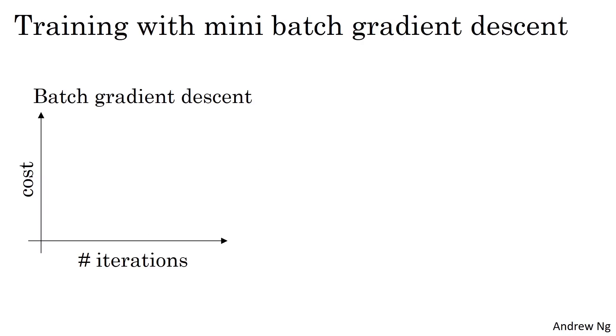With batch gradient descent, on every iteration you go through the entire training set, and you'd expect the cost to go down on every single iteration. So if you plot the cost function J as a function of different iterations, it should decrease on every single iteration.